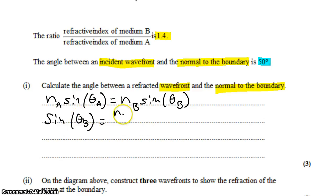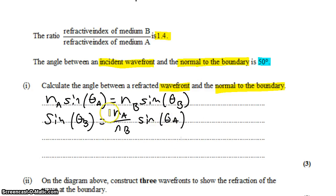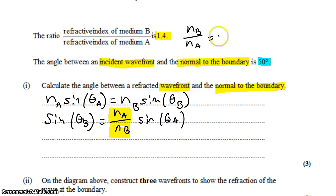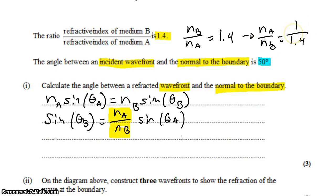We divide both sides by n_B to isolate sine of theta B. This gives us n_A over n_B times sine of theta A. This is simply the reciprocal of what we're given: n_B over n_A is 1.4, so n_A over n_B is 1 over 1.4. We know both terms now — the ratio and theta A at 40 degrees — so we can take the inverse sine of both sides.